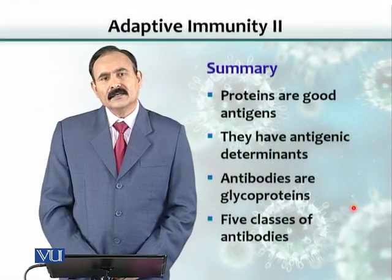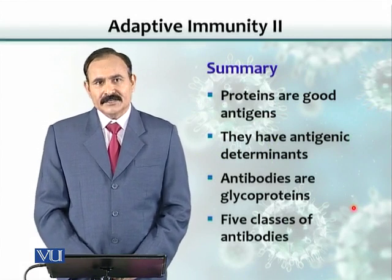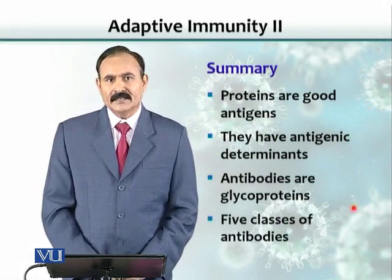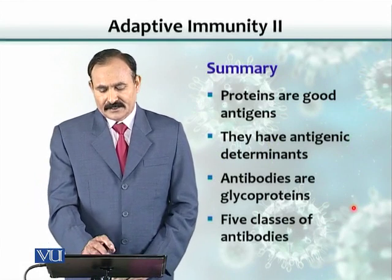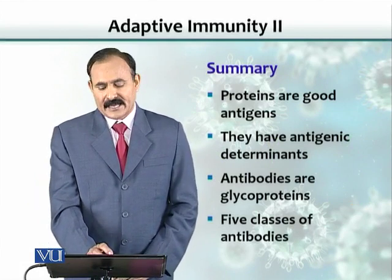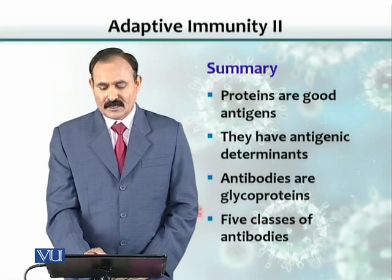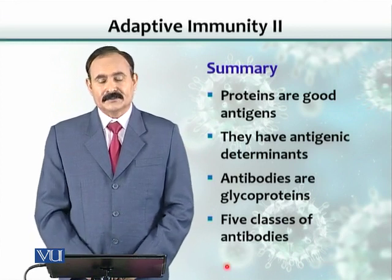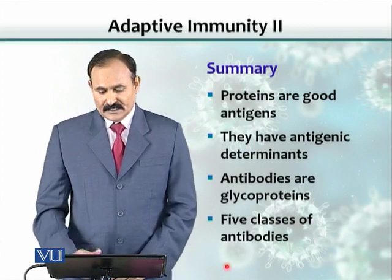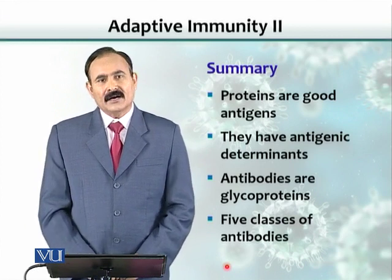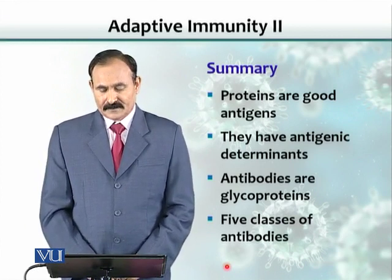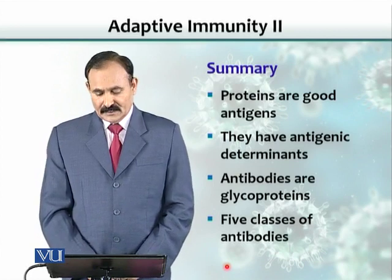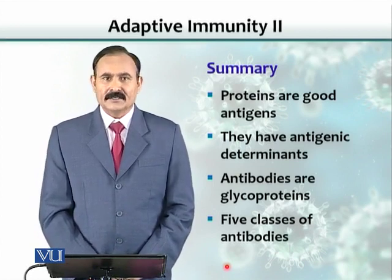In summary, proteins are good antigens because of their complexity and larger molecular weight. Every antigen has antigenic determinants, which we call epitopes. Antibodies are glycoproteins in nature, secreted by B cells, and there are five classes of antibodies.